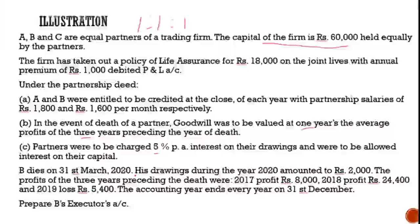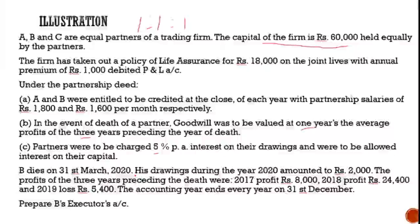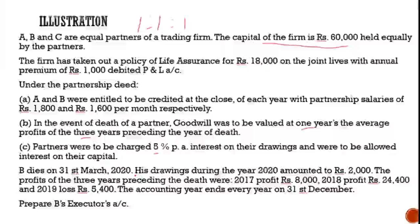The date of death is 31st March and the deceased partner is B. His drawings during the year 2020 amounted to Rs. 2,000. Profits for the 3 years preceding death: 2017 Rs. 8,000; 2018 Rs. 24,400; and there is a loss in 2019 of Rs. 5,400. The accounting year ends on 31st December.